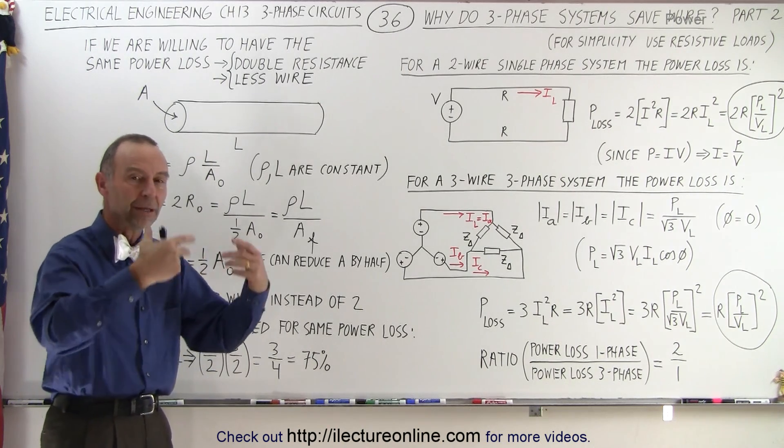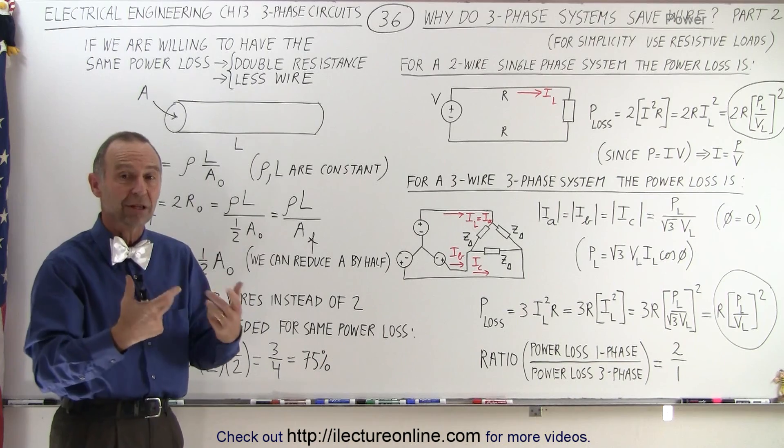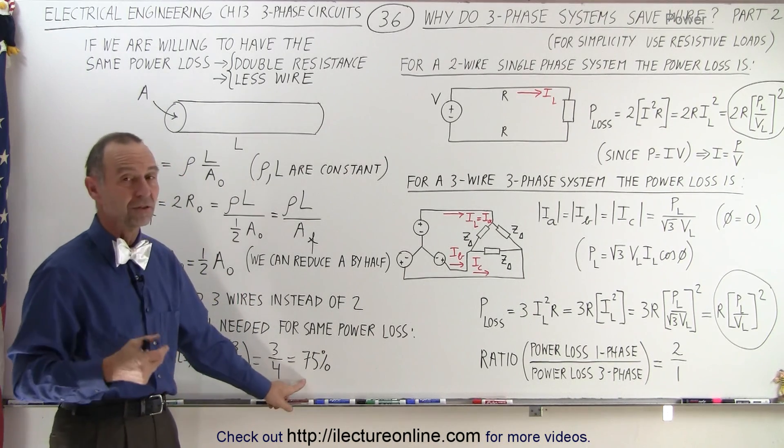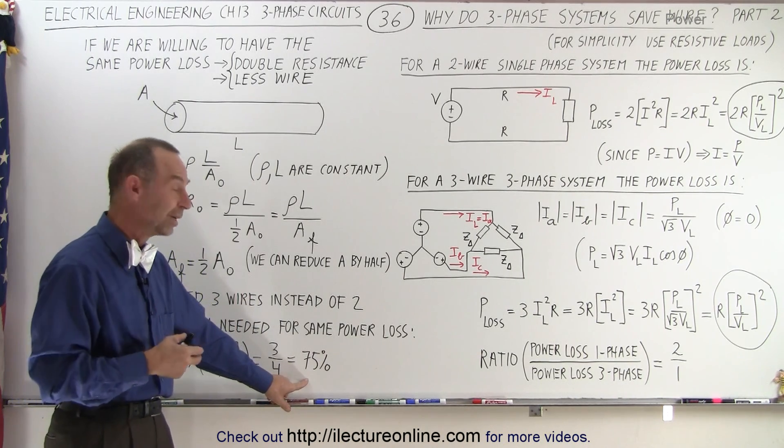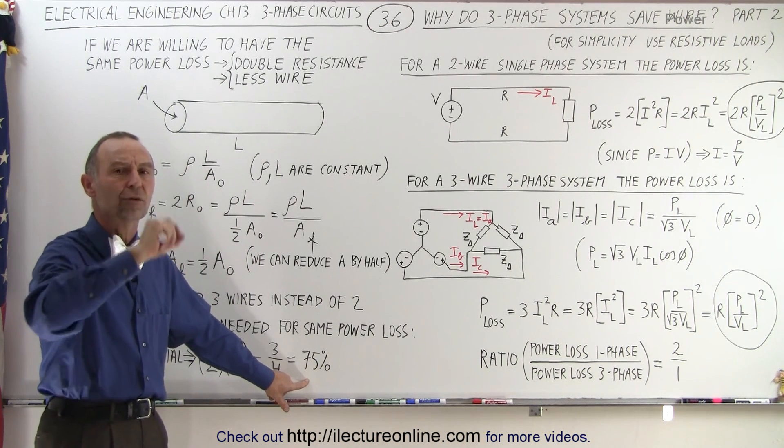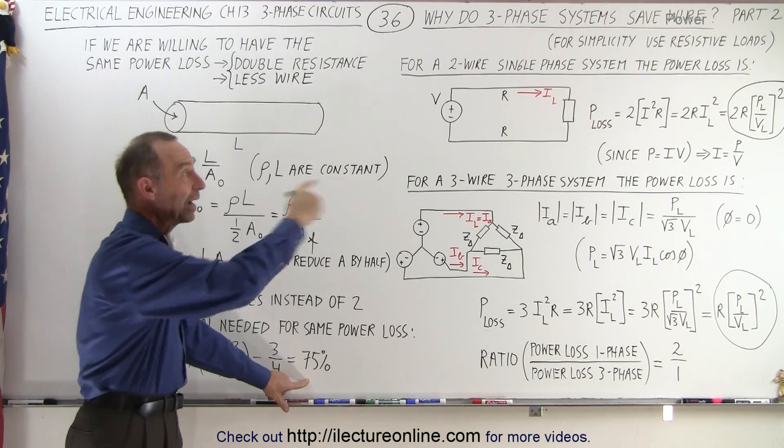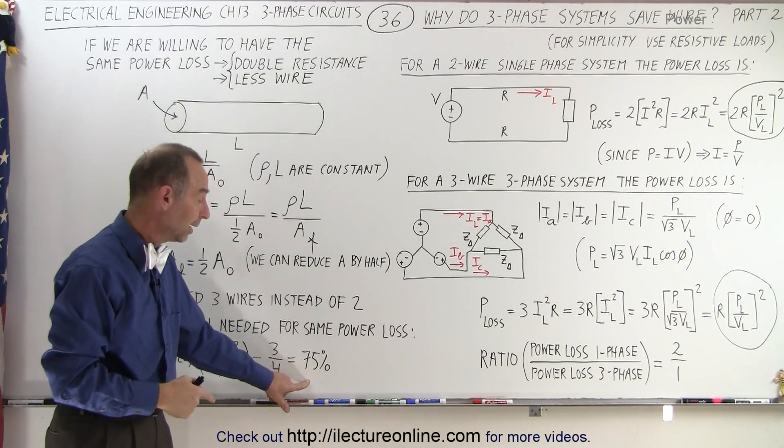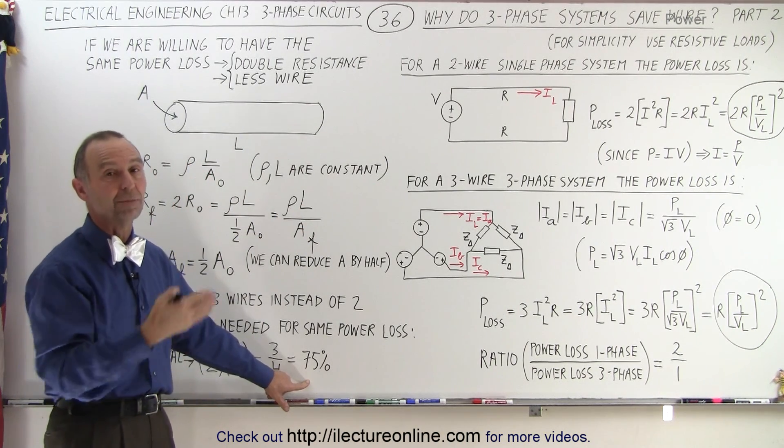If we're willing to have the same amount of power loss, and the driving cost is the material cost, then we can save by having the same power loss by reducing the cross-sectional area to half as much on the wiring providing the current to the load. And then we save 25% in material.